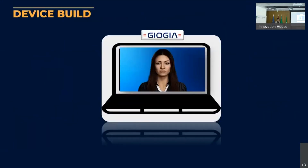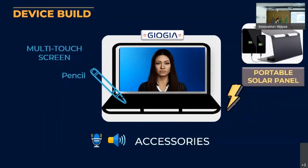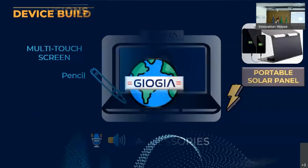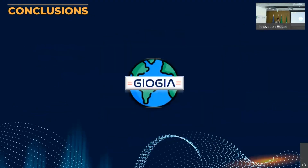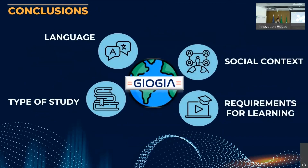The device is designed as a personal laptop, but it has to be adapted to the requirements of learning. Therefore, we need accessories useful for the experience, like microphones or speakers, a multi-touch screen with a pencil for writing applications, and the introduction of a portable solar panel as a solution to solve the electricity problem and charge the device. Georgia can be adapted to any kind of language, type of study, or social context, since the key point is on the game, which is a common element in lives around the world.